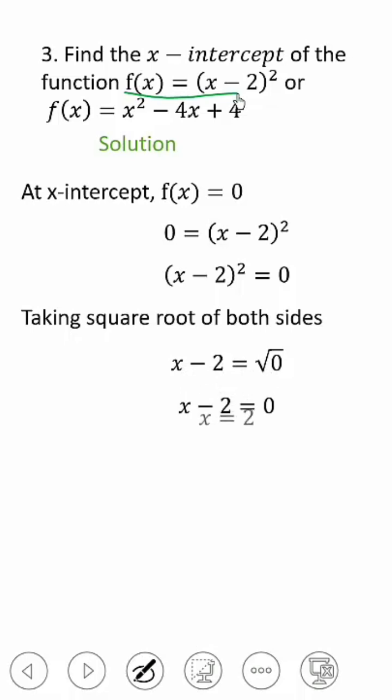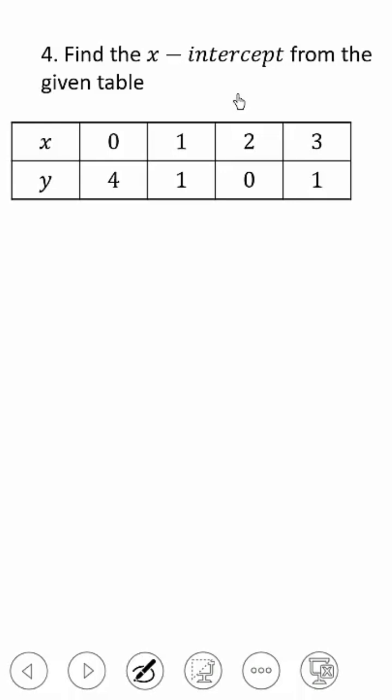Then there is another thing that can be given to you. You can be given a table. This time, look at where y equals 0. The corresponding x-value is the x-intercept.